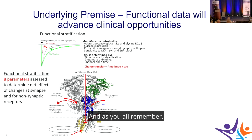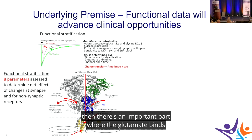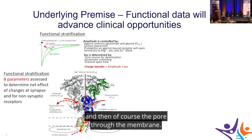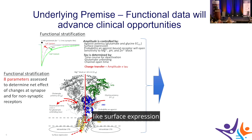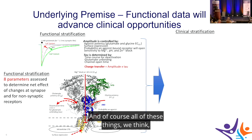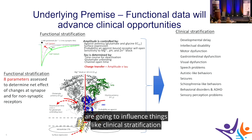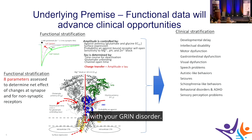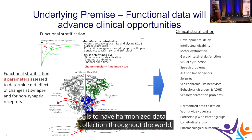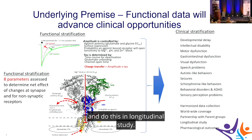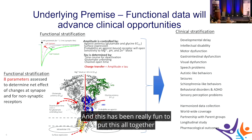The protein spans the membrane, with an important domain where glutamate binds, the N-terminal domain that senses what's happening in the synaptic cleft, the pore through the membrane, and the C-terminal domain — which influences surface expression and regulation. All of these features are expected to influence clinical stratification. Harmonized data collection worldwide, partnerships with parent groups, and longitudinal study have been really important — a fun collaboration with Johannes Lemka in Leipzig, Jennifer at Columbia, and the Simons group.